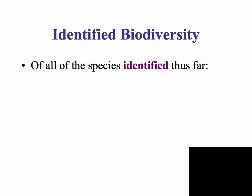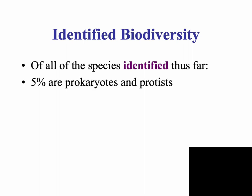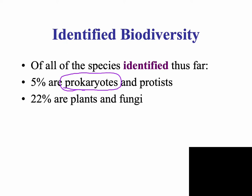Of all the species identified thus far, only about 5% are prokaryotes and protists. Prokaryotes are single-celled organisms that really make up the majority of organisms on Earth, though they haven't all been identified yet. Twenty-two percent are plants and fungi, and the rest are animals. So why are animals the most identified if prokaryotes are actually most numerous on Earth?